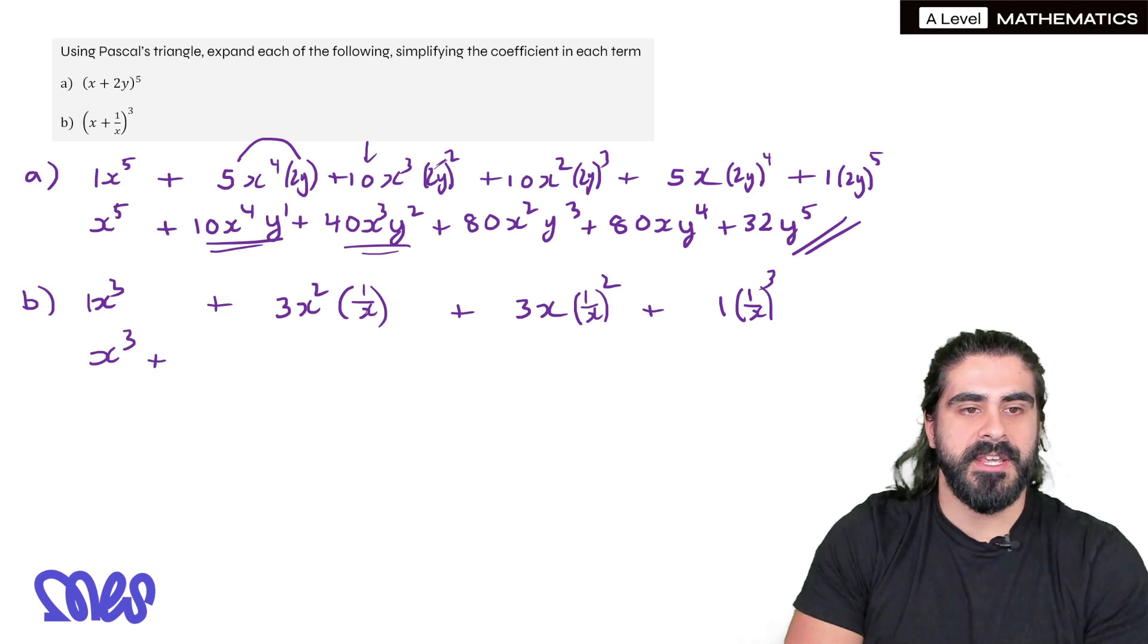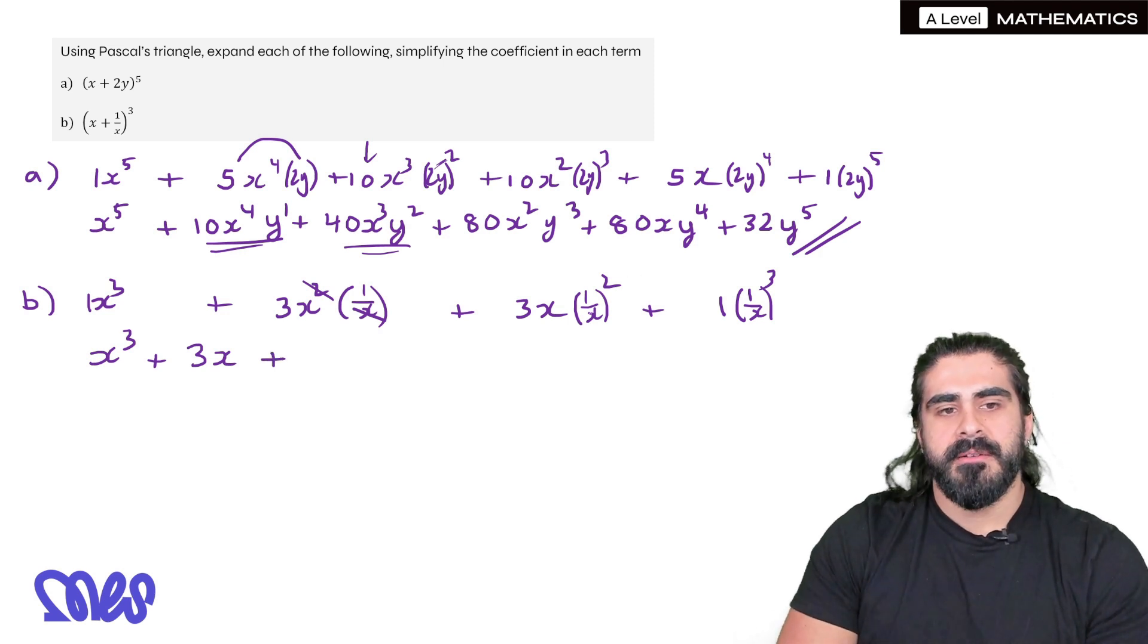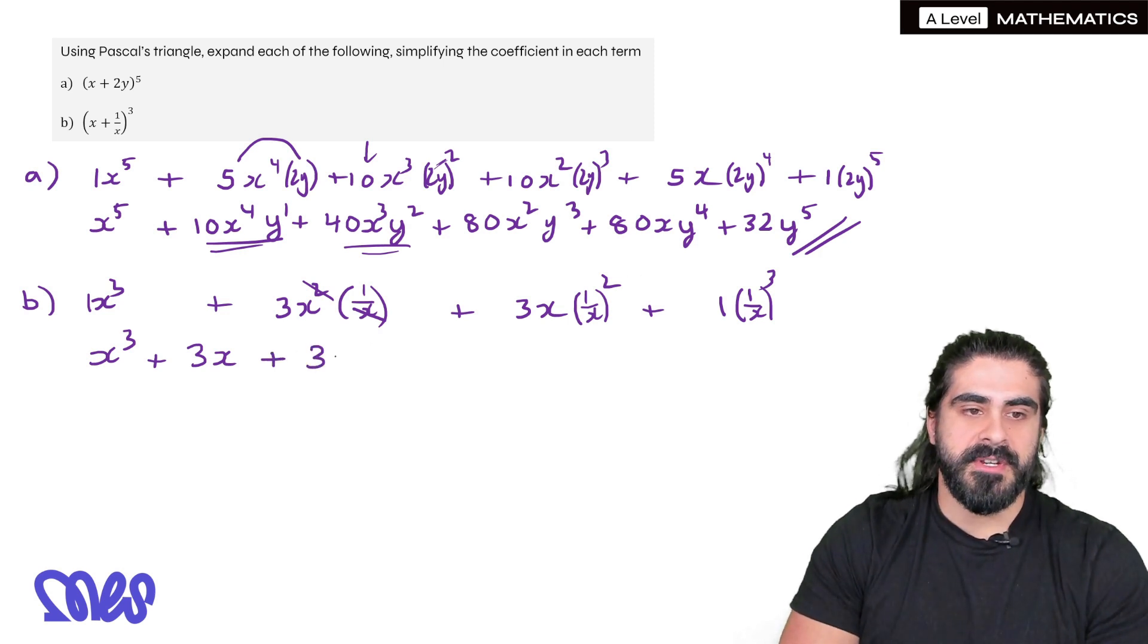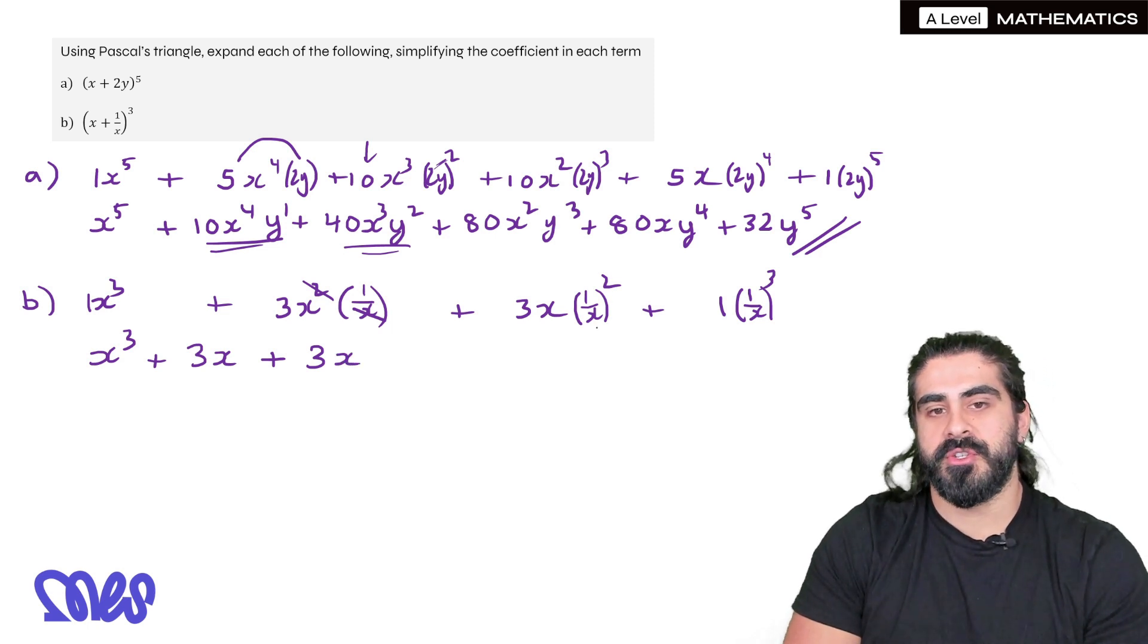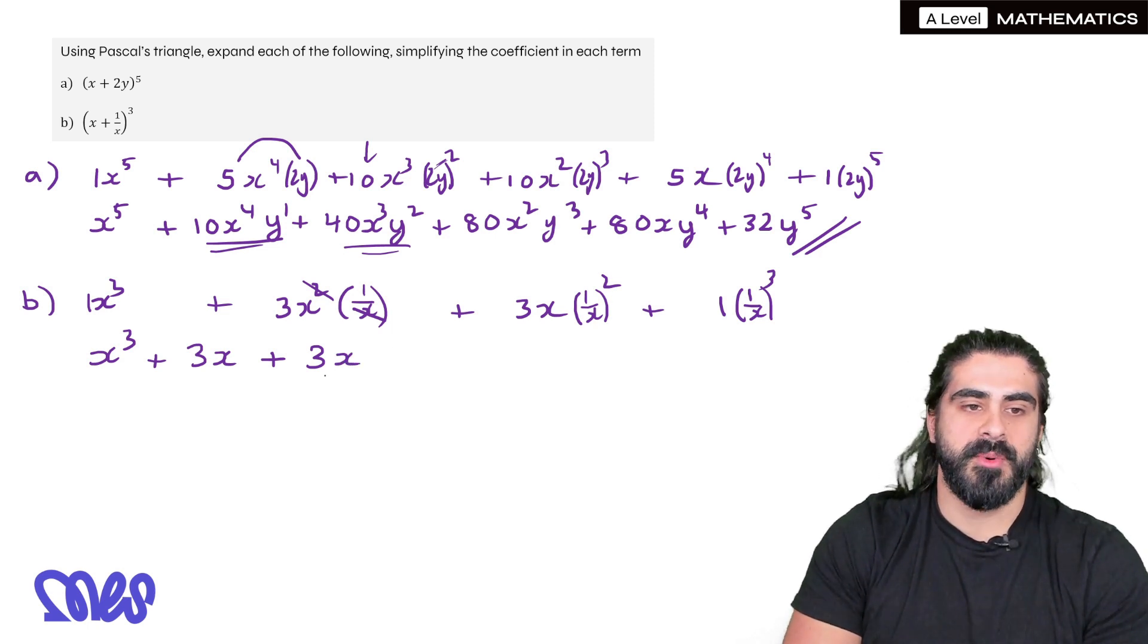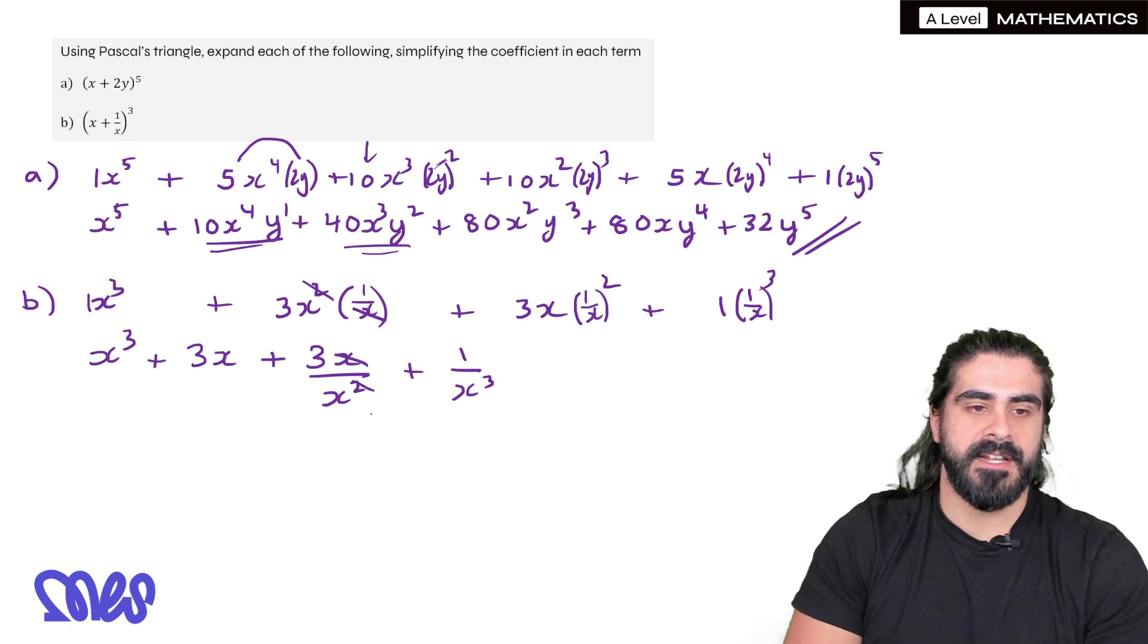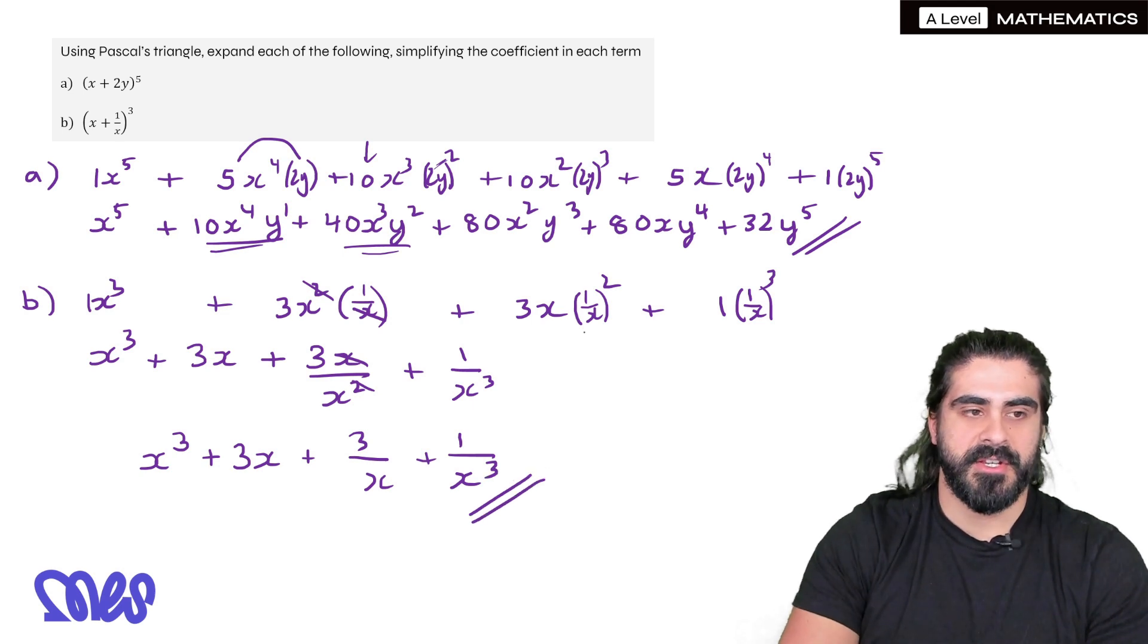So x³ + now here the x is going to cancel the x² to just leave 3x + now here, maybe you want to write it out. You could say 3x. Now 1/x² you square the top and the bottom, that'll be 1/x². So the x² we go in the denominator + 1/x³ for the final term. So the x's cancel here. So our final answer is x³ + 3x + 3/x + 1/x³. And that's our solution.